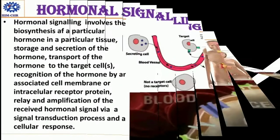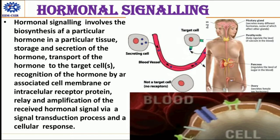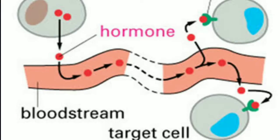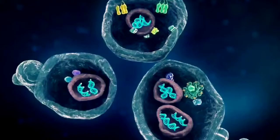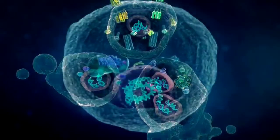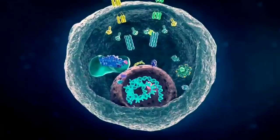Hormonal signaling involves the biosynthesis of a particular hormone in a particular tissue, storage and secretion of the hormone, transport of the hormone to the target cells, recognition of the hormone by the associated cell membrane or intracellular receptor, and then the relay and amplification of the received hormonal signal via a signal transduction process, producing a cellular response.